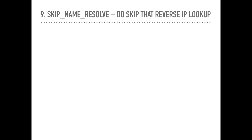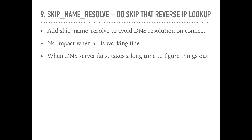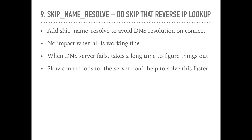Skip name resolve: add skip_name_resolve to avoid DNS resolution on connection. Most of the time you will feel no impact when you change this, because most of the time DNS servers work well and cache results. But when a DNS server fails, it could be really time-consuming to figure out why those unauthenticated connections appear on your server and why things all of a sudden seem slow. So don't wait until this happens to you. Add this variable now and get rid of any hostname-based grants. The only exception is if you're using hostfile-based name resolution or if your DNS servers will never fail.